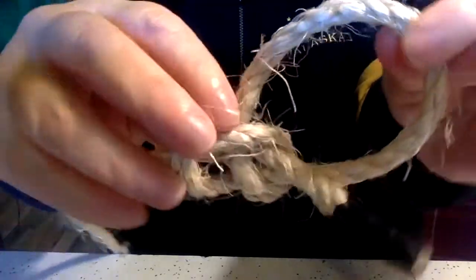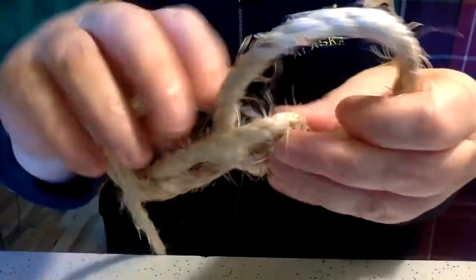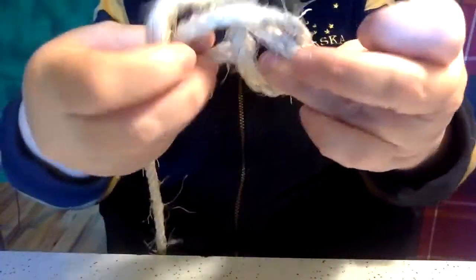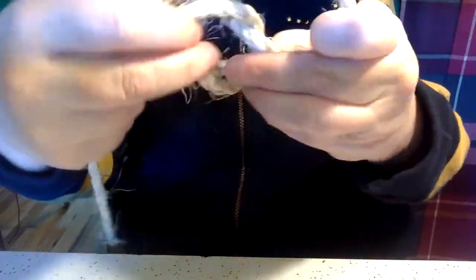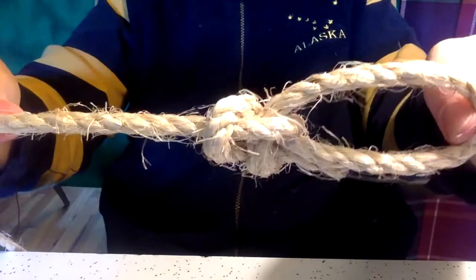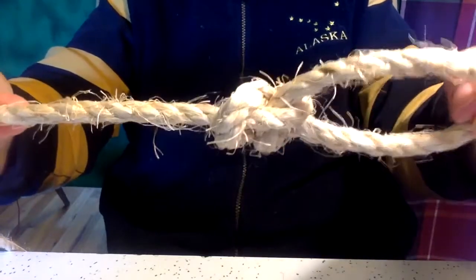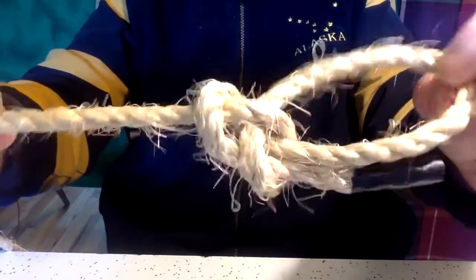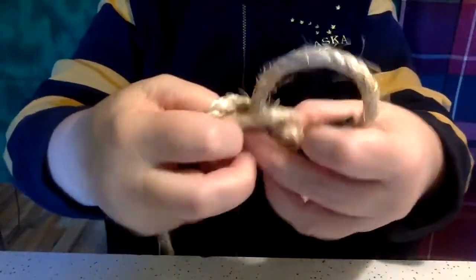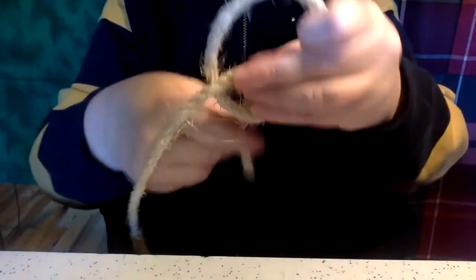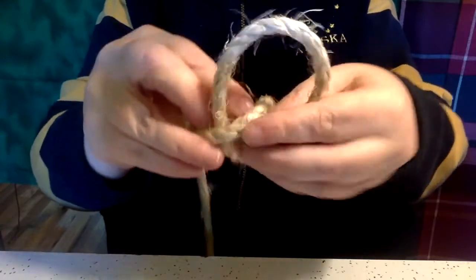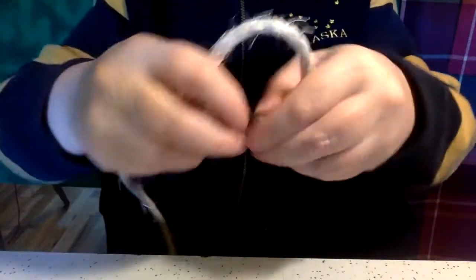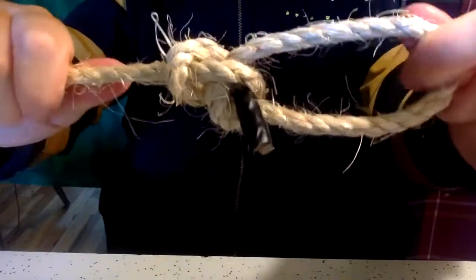There it is. You want your tail to be on the inside. Some people, when they're first learning, will tie it to the outside. It will hold until you have a lot of strain on it. Then it will break. You don't want that. Tuck your tail to the inside.